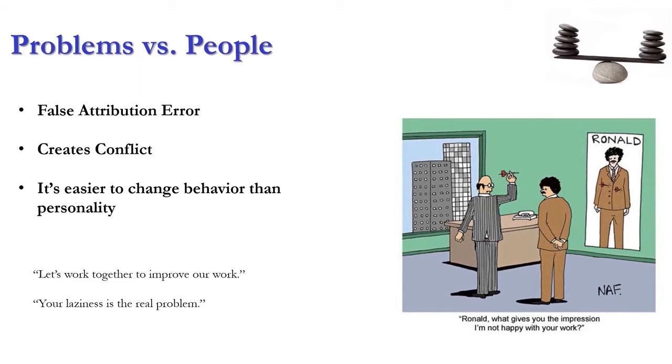Here's an example of what we mean. Instead of what we want to say, 'Hey, let's work together, Dan, on improving our work, or making sure that we're all more punctual,' what I say instead is, 'Well, your laziness is the real problem with our team.' Not going to go well. Common sense, and yet you hear people communicate using the false attribution error, focusing on people instead of problems.